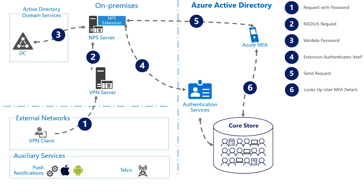The user has registered for Azure MFA, and if they have more than one authentication method, they can set one of them as their default method. In this scenario, the user has set their default method to one of the notification methods, such as Microsoft Authenticator or phone calls. When the Azure MFA service goes to invoke the MFA request from the NPS extension, it looks up the user's MFA details and invokes the MFA challenge using that method.